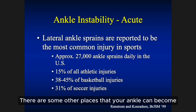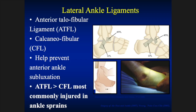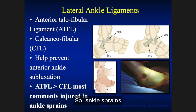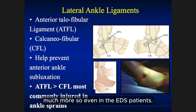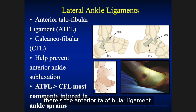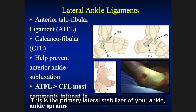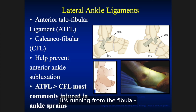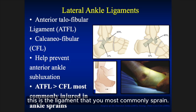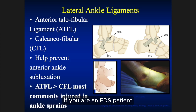Lateral ankle sprains are one of the most common injuries even in non-EDS people. When we're talking about ankle instability, the main structure is the anterior talofibular ligament — the ATFL. This is the primary lateral stabilizer of your ankle, that top bar in the cartoon, running from the fibula — the bone on the outside — to the talus, the underneath bone of the ankle. When you sprain your ankle, this is the ligament you most commonly sprain, and if you are an EDS patient with chronic ankle instability, this is the one most likely to be unstable.